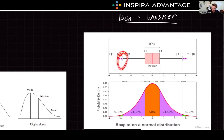The whiskers extend out from the box and represent the spread of the data — the maximum and minimum. Sometimes they represent the smallest and largest observations within 1.5 times the interquartile range, or IQR, which is the distance between Q1 and Q3. Any data points that fall outside the whiskers are considered outliers and are often represented by individual points or asterisks. Box plots are really useful because they give a visual summary of the data's central tendency, dispersion, and skewness all in one glance.